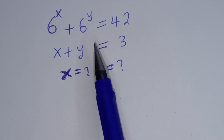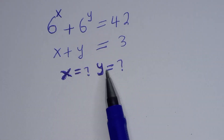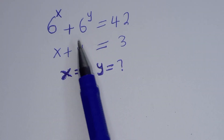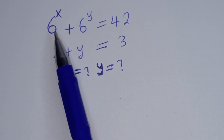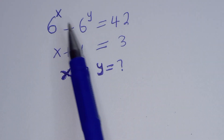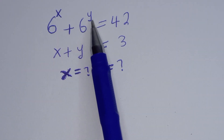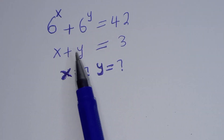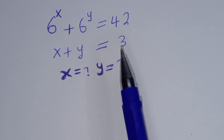Hello. How to solve for s and y from this given algebra problem. 6 raised to power s plus 6 raised to power y is equal to 42, and s plus y is equal to 3.